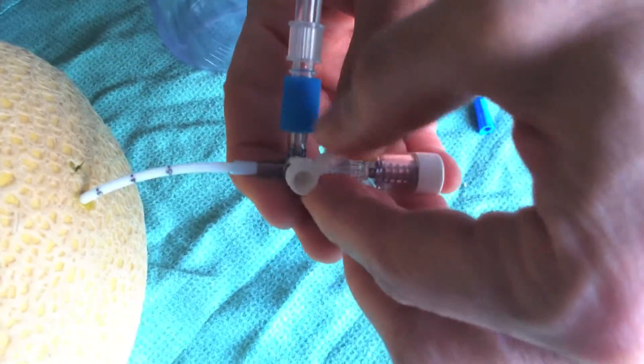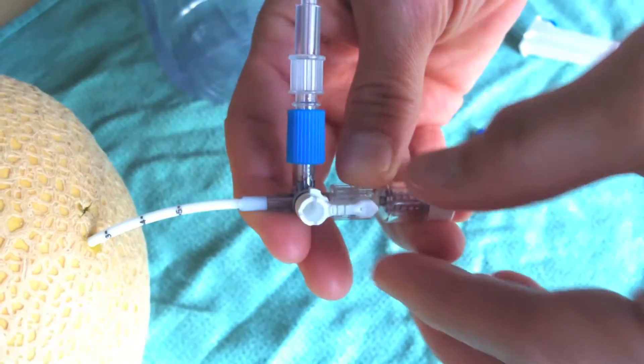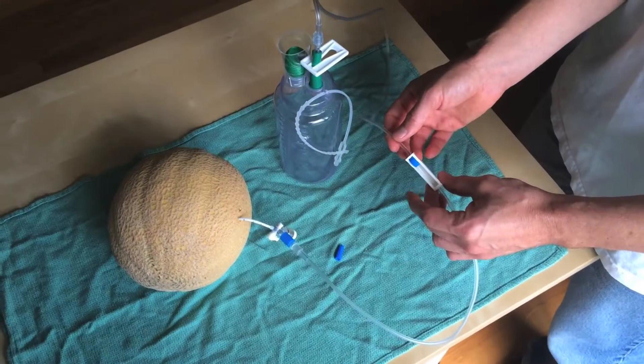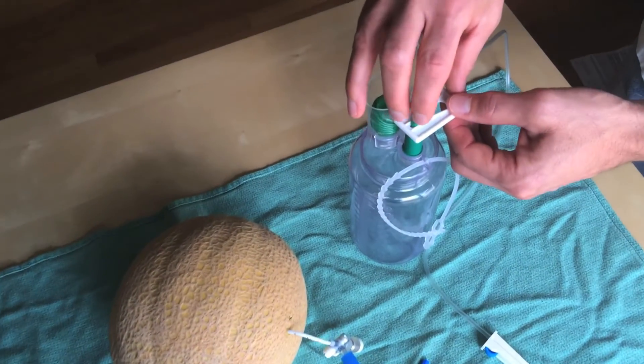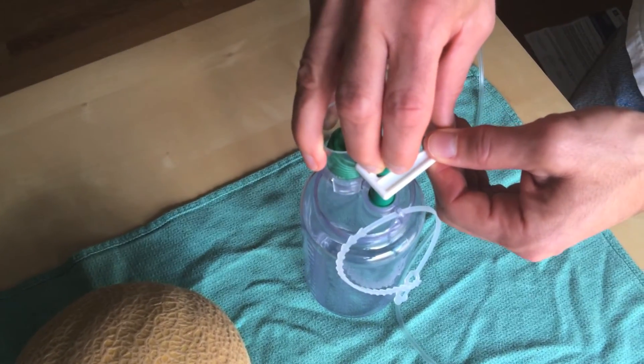Next, switch the stopcock to the open position. Ensure that the clamp on the tubing is open and you can start the drainage by releasing the white clip on the vacuum bottle.